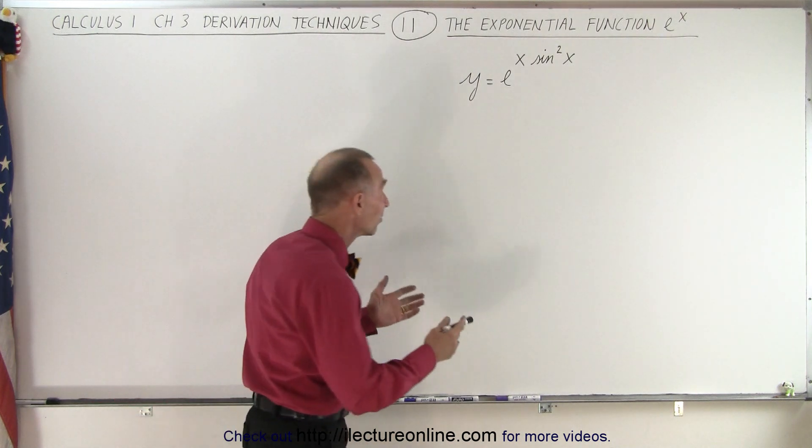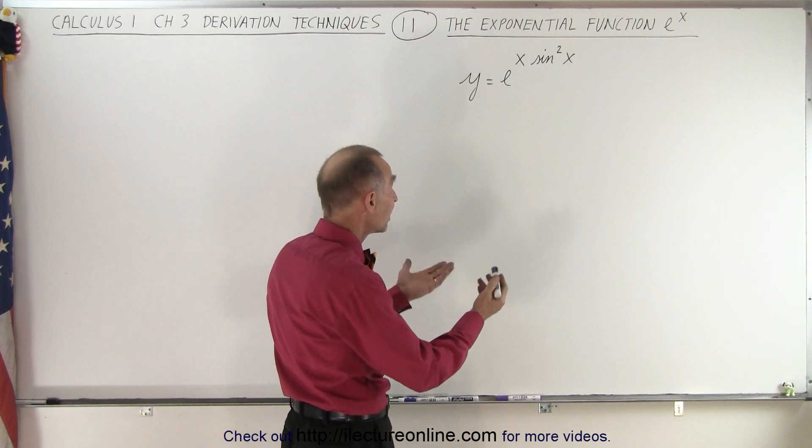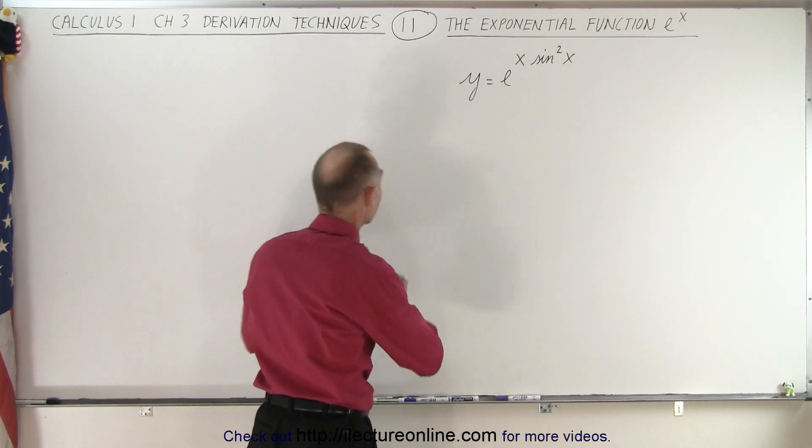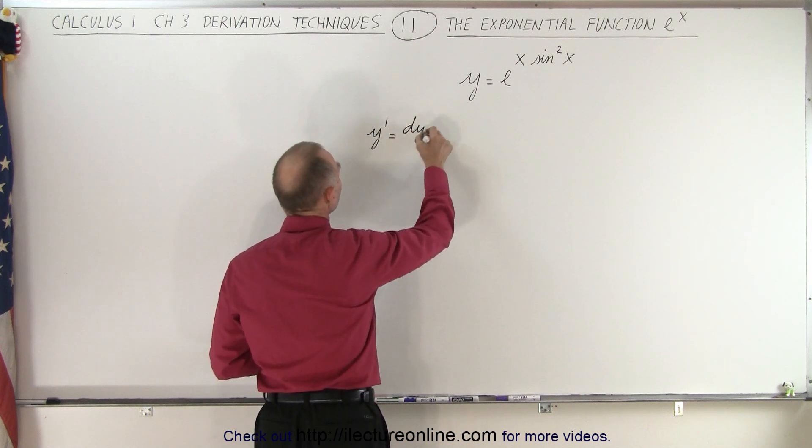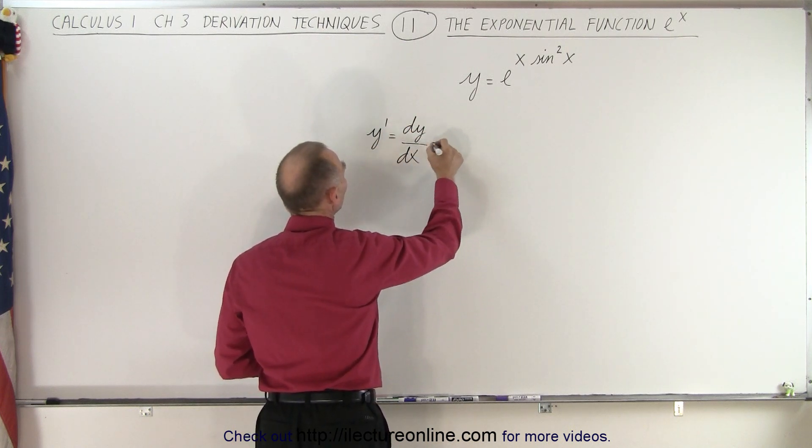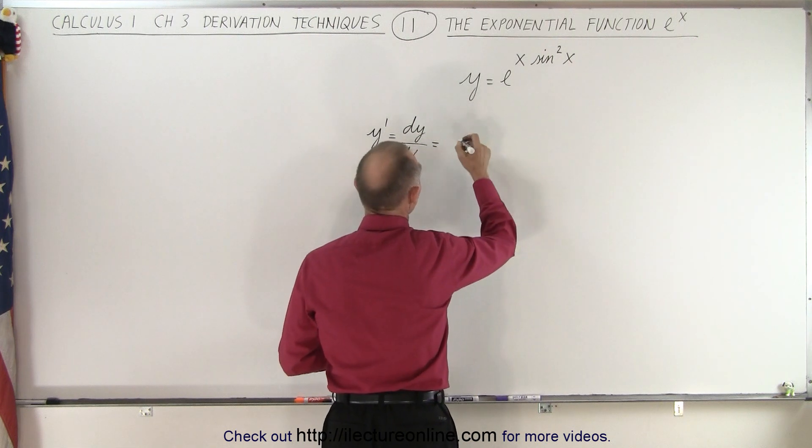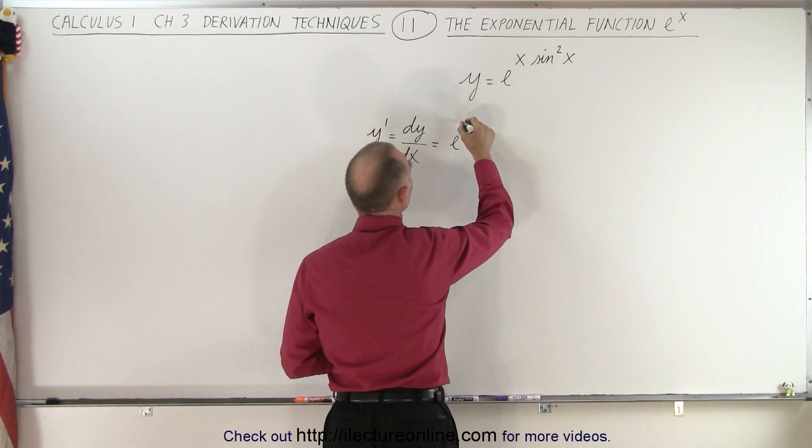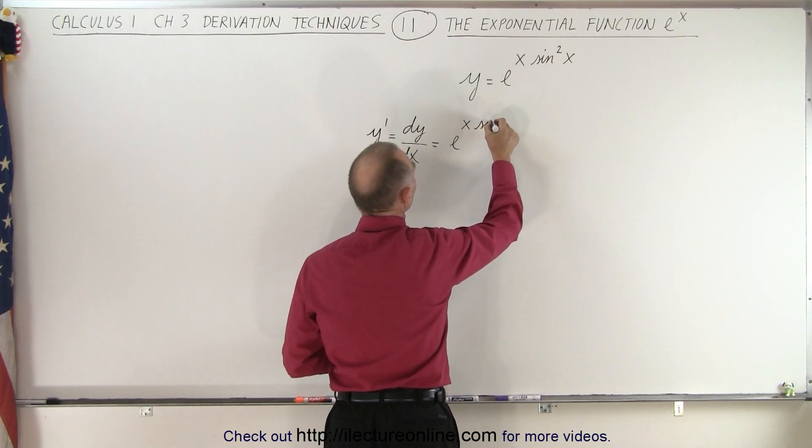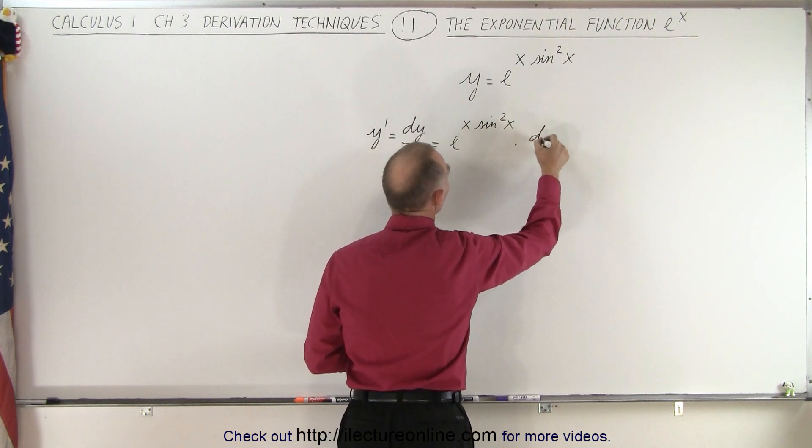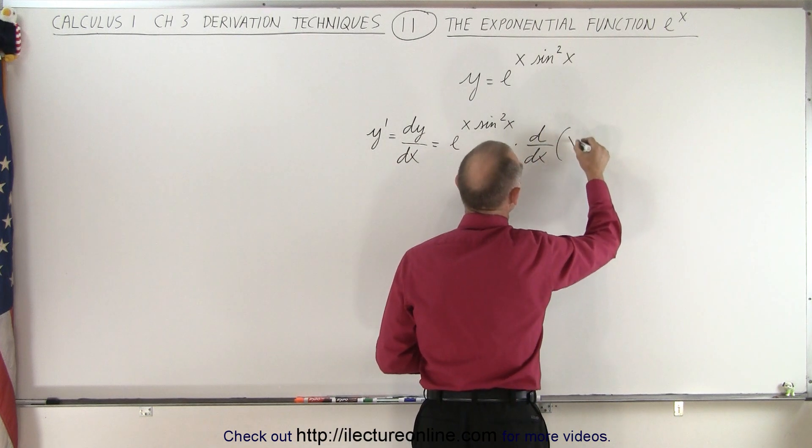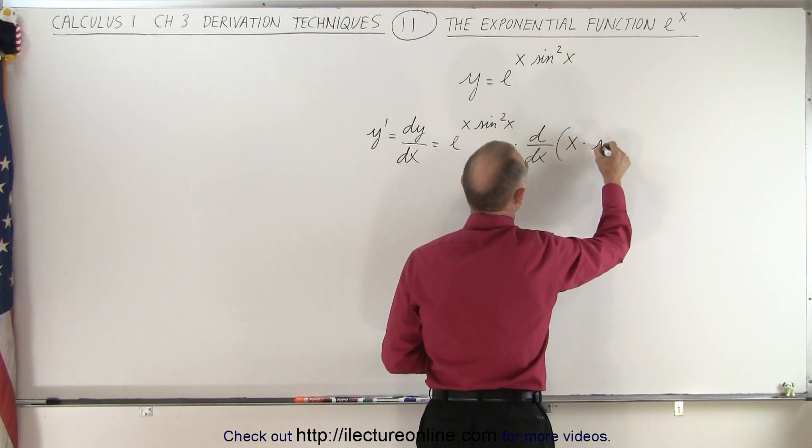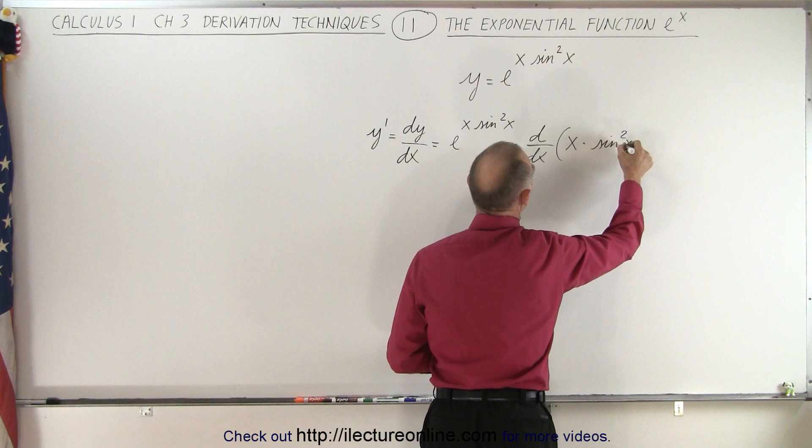Well, this is how it's done. Again, since it's an exponential function with base e, we can go ahead and start by saying that the derivative, y prime, which can be written as dy dx, is going to be equal to—we'll write down the exact same thing—e to the x times the sine square of x times the derivative, with respect to x, of the exponent, which is x times the sine square of x.